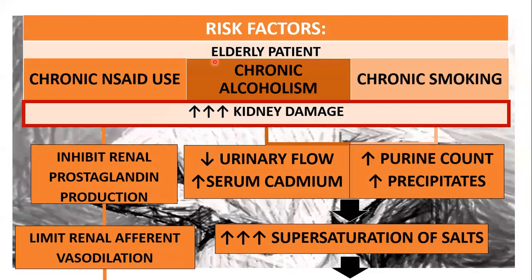The risk factors for chronic kidney disease would be advanced age and chronic acid use, chronic alcoholism, and chronic smoking — all of which would predispose the kidney to a lot of damage. Chronic acid use would inhibit renal prostaglandin production. For chronic alcoholism and chronic smoking combined, they would decrease the urinary flow and increase the serum cadmium, and also increase the purine count and increase the precipitates.